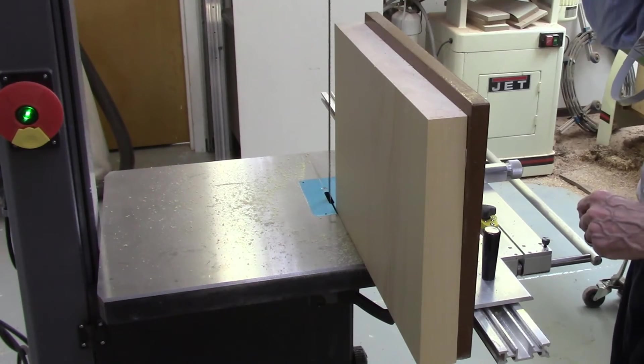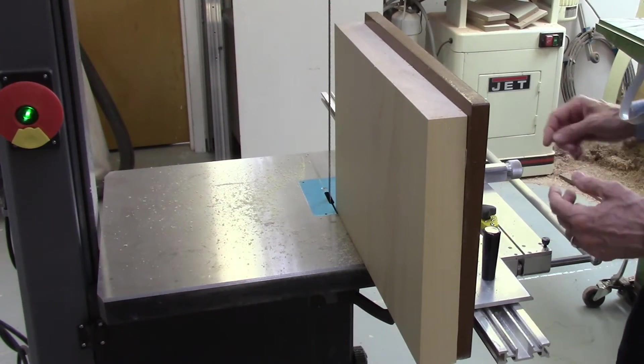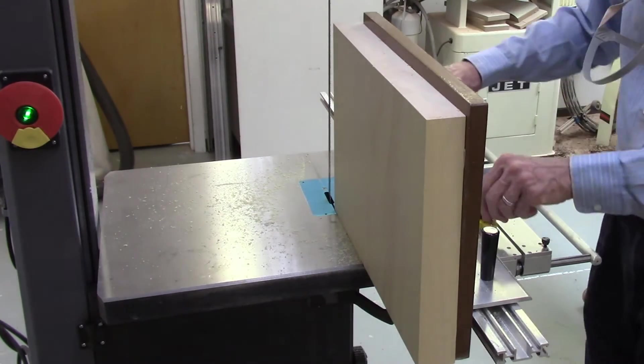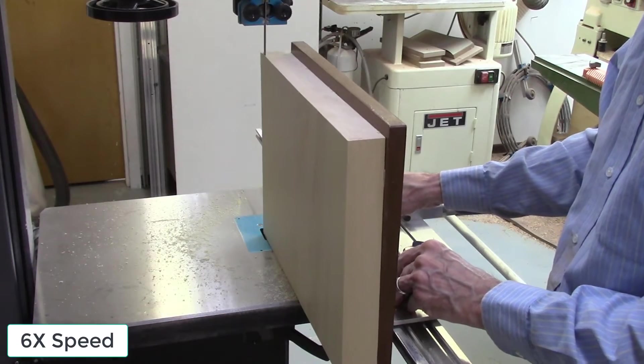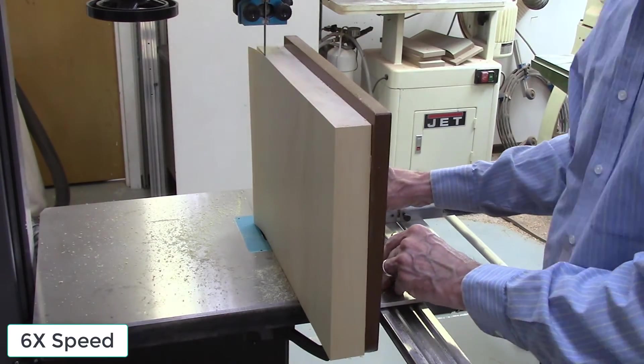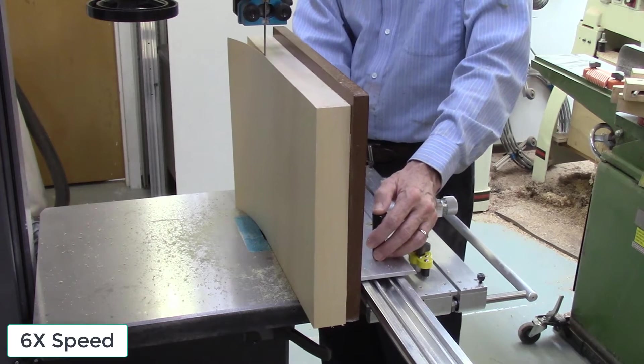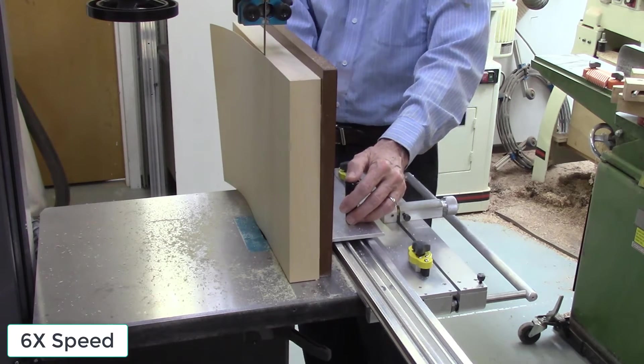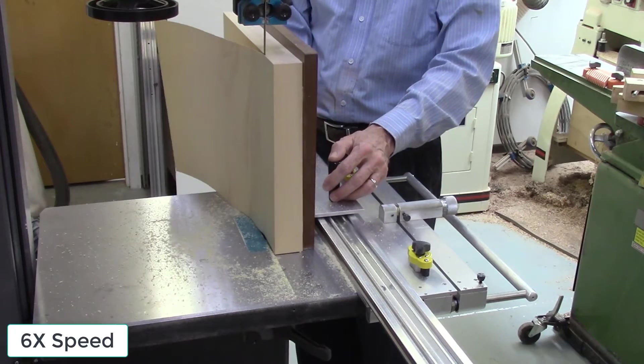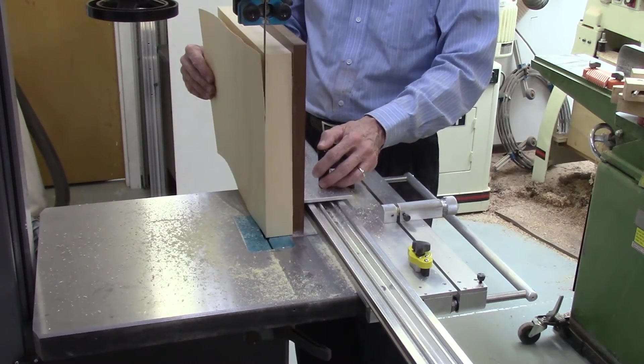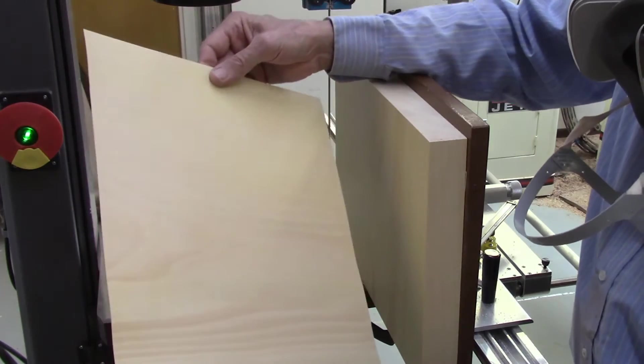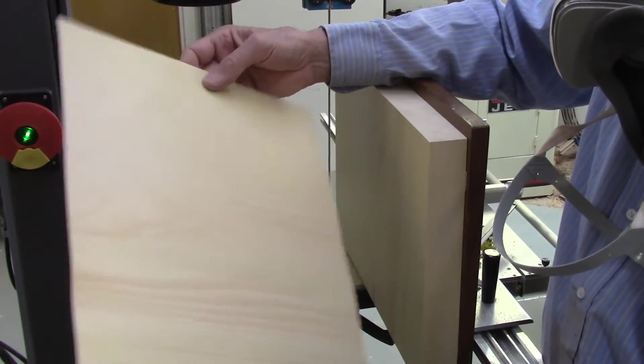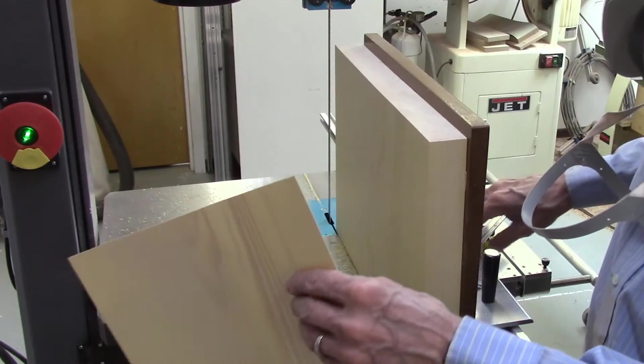So I'm going to go ahead and cut a 25 thousandths inch thick piece of wood. And there we cut a beautiful piece of veneer, 25 thousandths inch thick. No saw marks, no burn marks, perfectly clean. Let's do some dimensional checks on it.